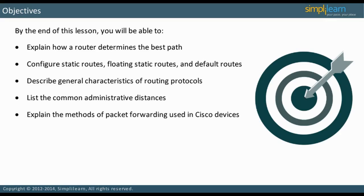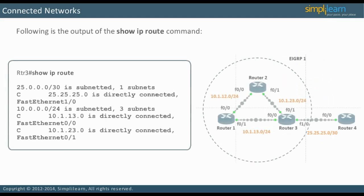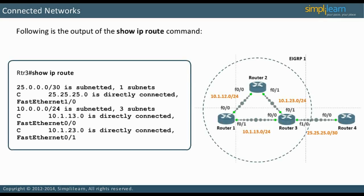Let us discuss routing in the next slide. Look at the output of the show IP route command. This command displays the routing table of the router. Two classful networks can be seen in the routing table: the 25.0.0.0/30 and the 10.0.0.0/24 network. The routing table is organized by classful network even if Variable Length Subnet Mask, VLSM, is used.